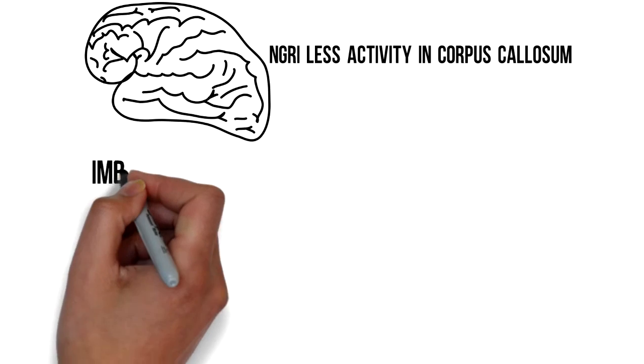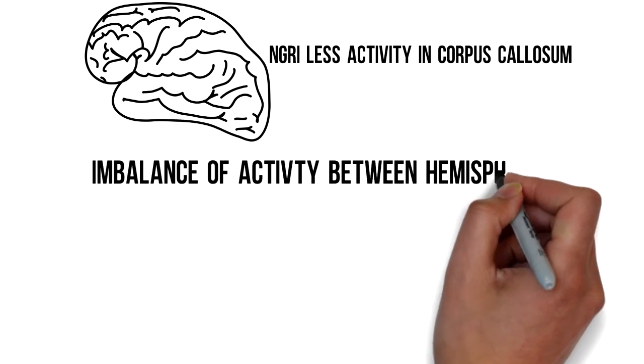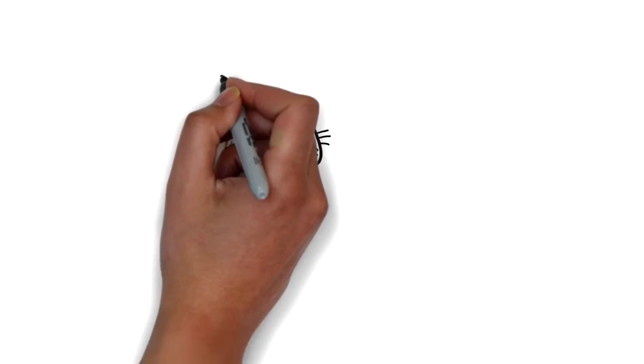The NGRIs also showed less activity on the left hemisphere of the brain and more on the right side. These results lead back to the second aim of Raine's experiment.